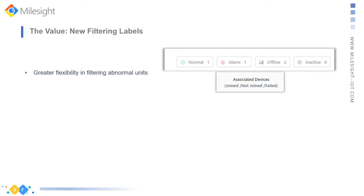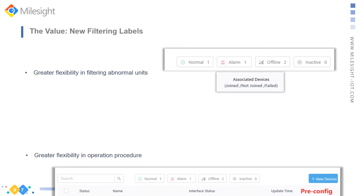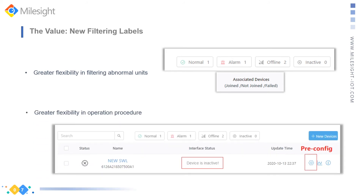Here you can find the LoRaWAN network status of each sensor or sensor node. Users will have greater flexibility in the operation procedure. On older versions, you need to add sensors into the gateway and power on the sensors, then wait until sensors join the LoRaWAN network successfully.